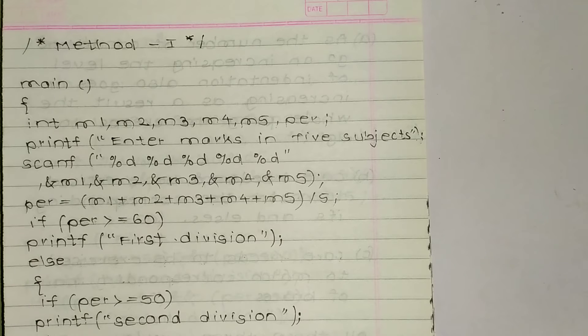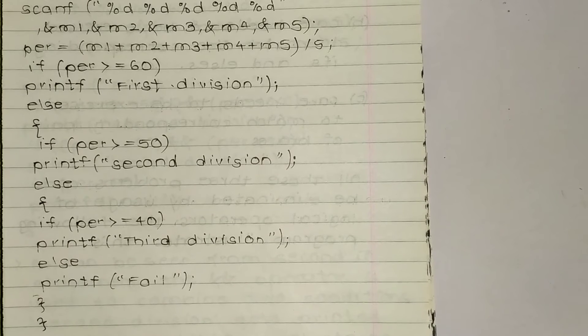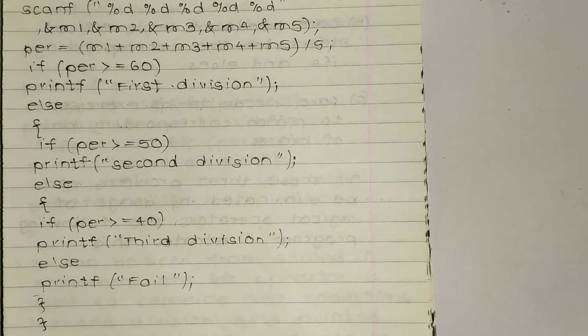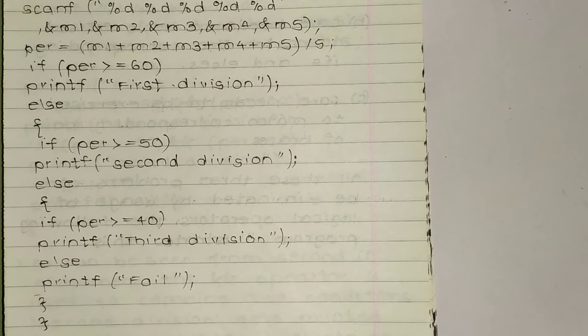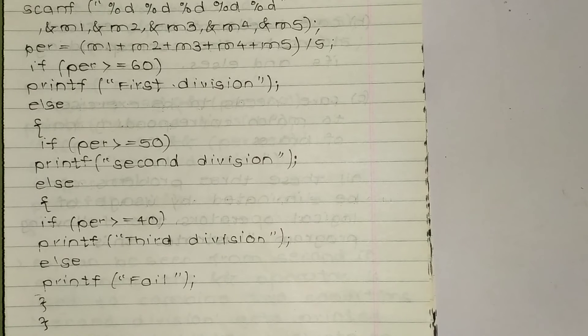After scanning, we have data of five marks. Now we will do calculations. Per, that is percentage, is equal to m1 plus up to m5, so all these are added and divided by five, that is average. Because all marks were out of 100, the percentage is equal to addition of all marks divided by number of subjects that is five. Now we have value of per which is saved in integer per.